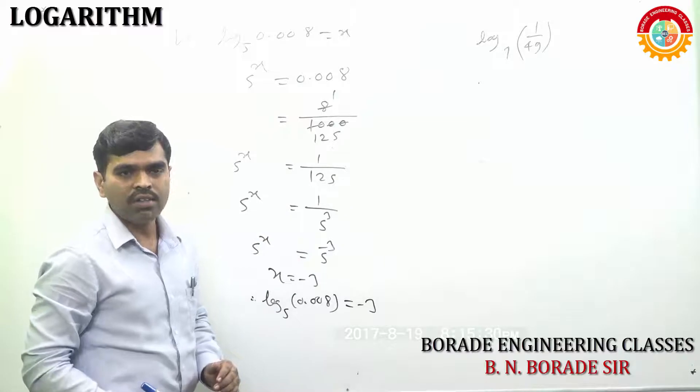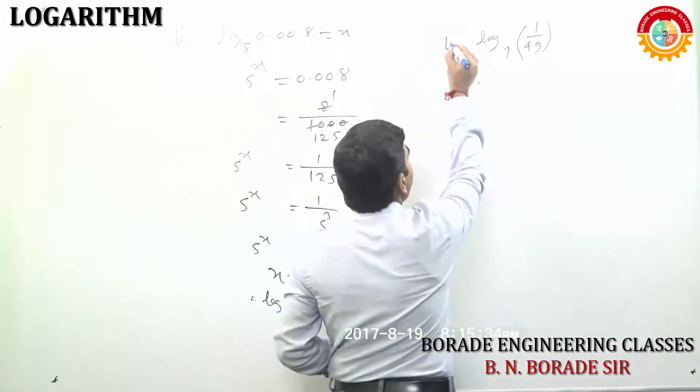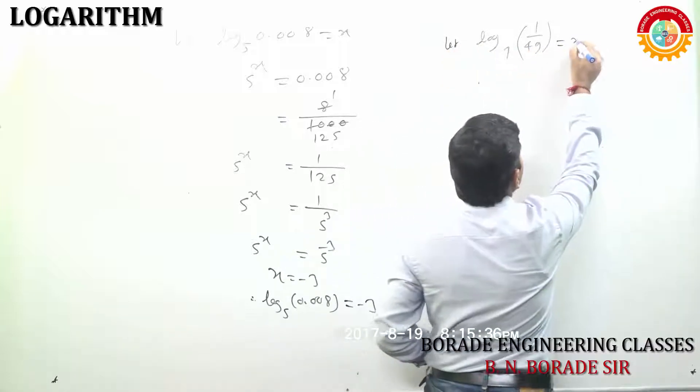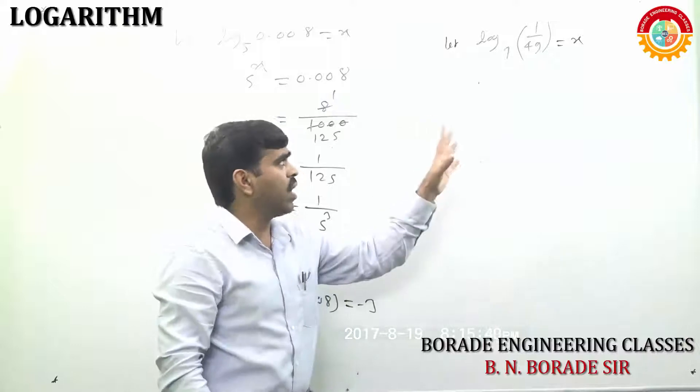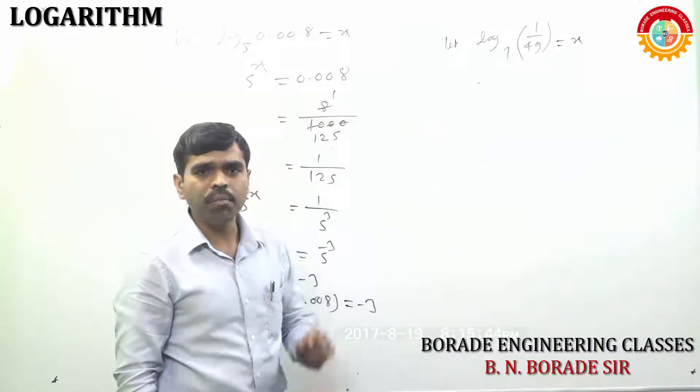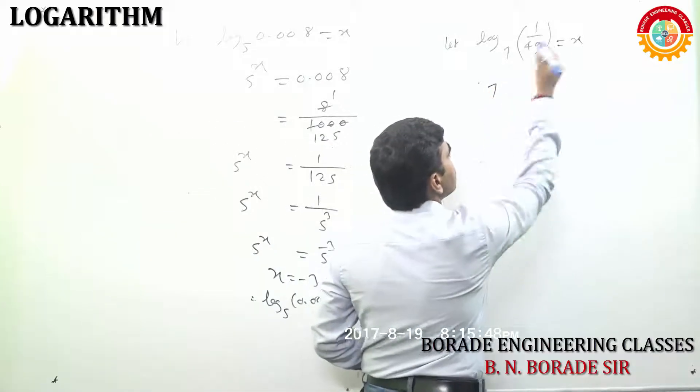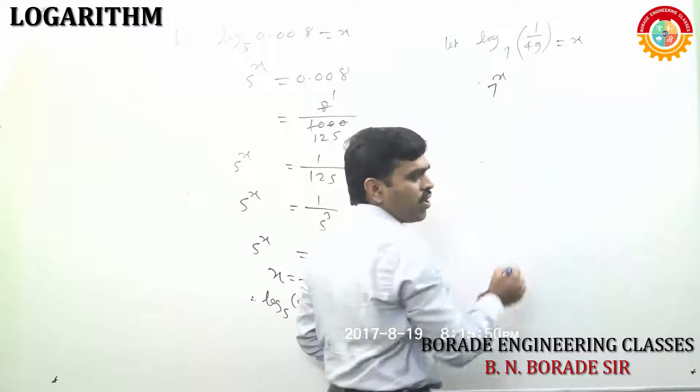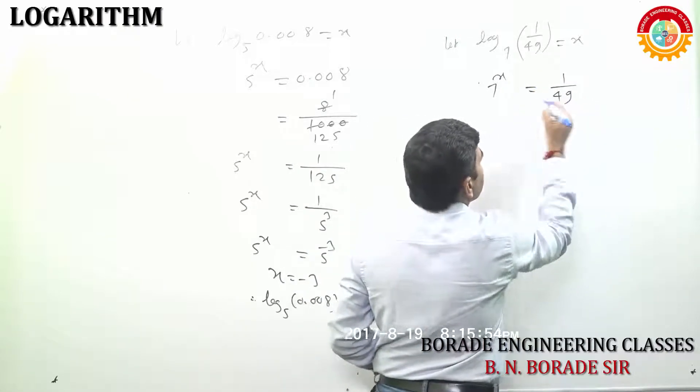So, we can write log of 0.008 to the base 5 equal to minus 3. Ya aap laas na re answer. Now, let us see next one. Ya la aapan consider roya. This is equal to x. Tell me how to find out value of this logarithm. Base kiti aahe? 7. Ya cha index kiti leahela paise. That is raised to x. Equal to 1 upon 49.